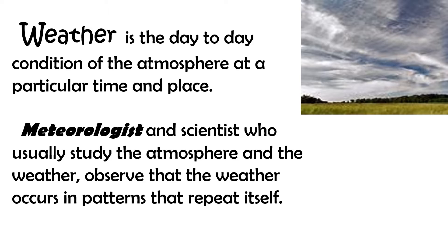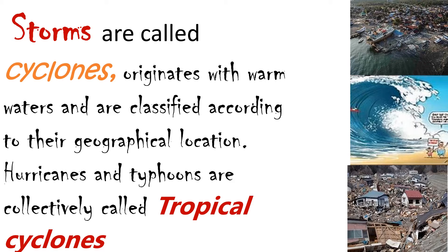Meteorologists and scientists who study the atmosphere and weather observe that weather occurs in patterns that repeat themselves. Now let us define what a storm is. Storms are called cyclones; they originate with warm waters and are classified according to their geographical location.